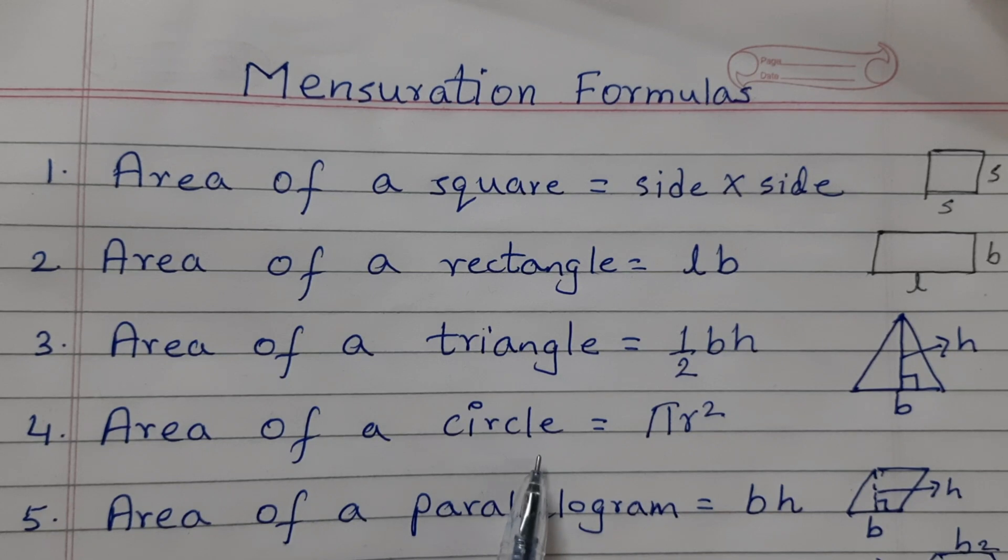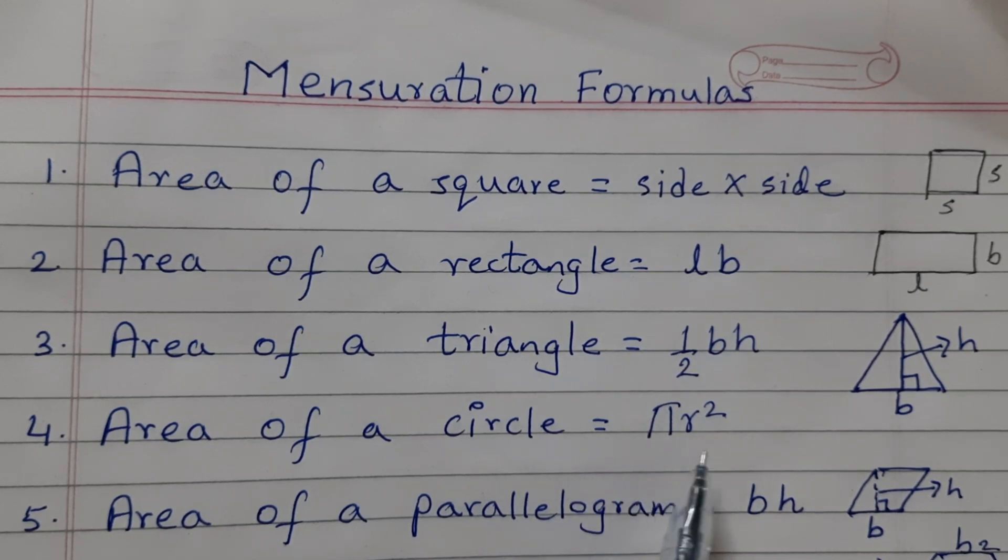Area of a circle is equal to pi r squared. The value of pi is 22 by 7 or 3.14 and r is the radius.